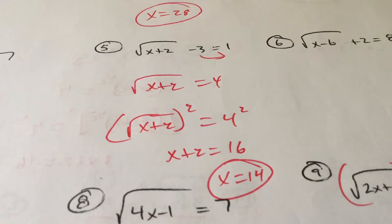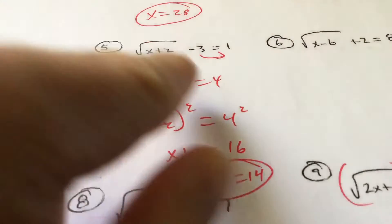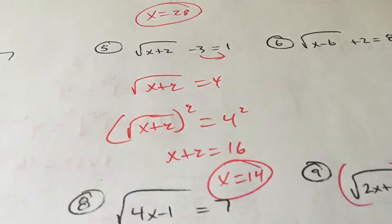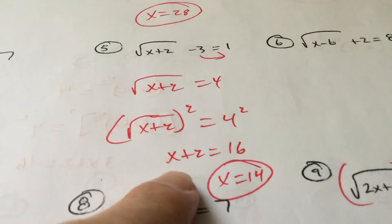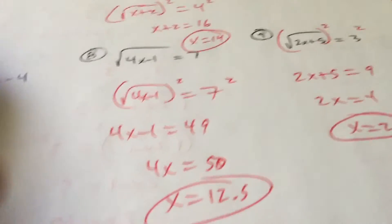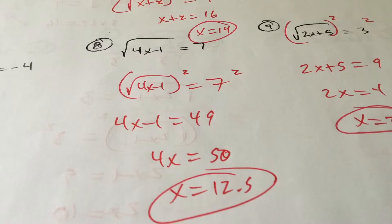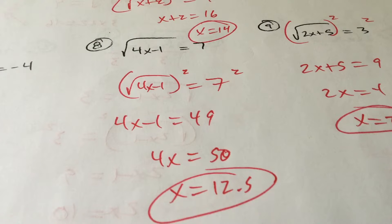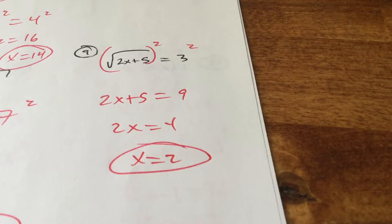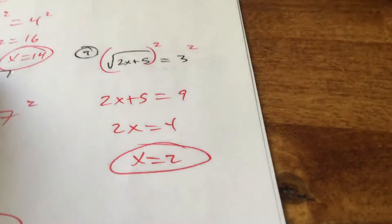We'll talk more about that in class. You're going to add 3 to both sides, and when you have a square root equals a number, you square both sides — that drops out. x plus 2 equals 16, so x is 14. Square both sides right away and you get 4x minus 1 equals 49 (not 14, not 7). Add 1 to both sides, divide by 4 — you can get decimals. Square both sides, subtract 5, divide by 2.